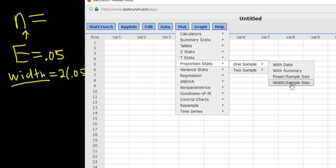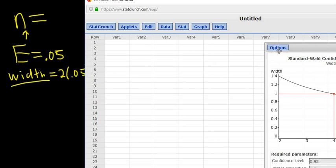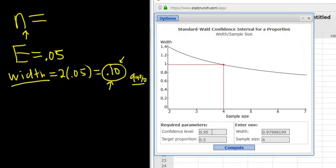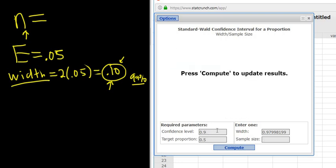Okay. So width, sample size. Click it. And you get this funky looking diagram here. So the level is 99%, so I'm going to change that first. The width in this case is 0.10. It's always twice the margin of error.